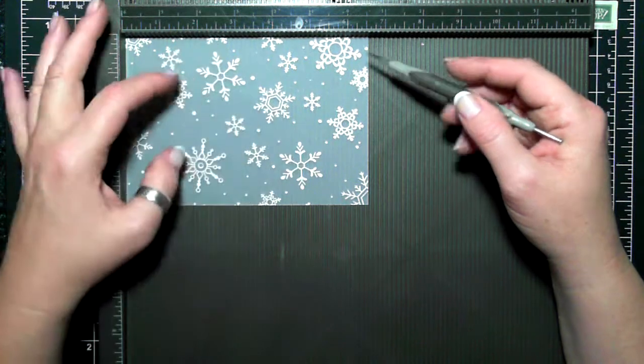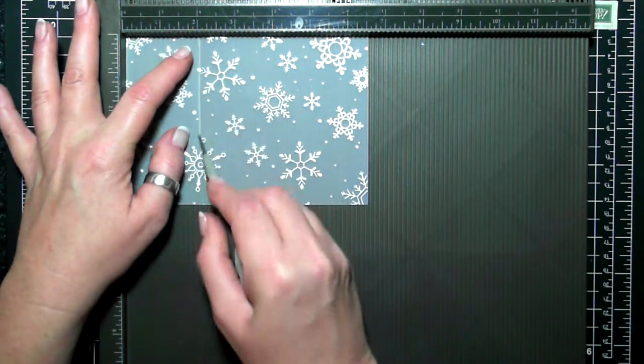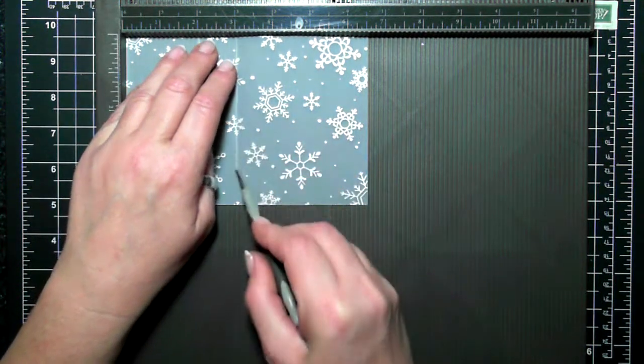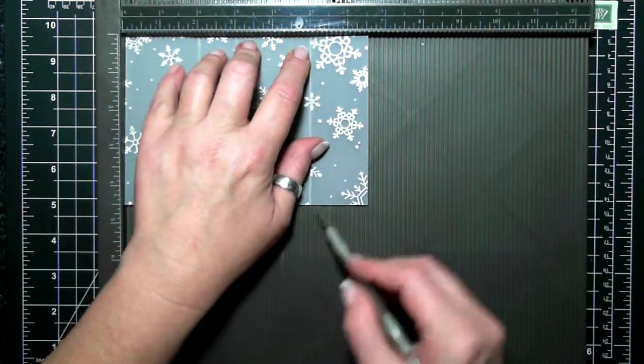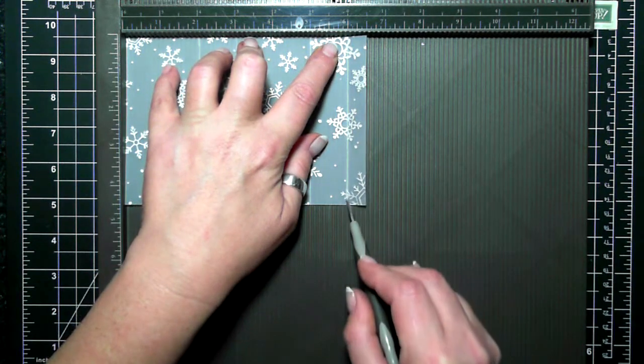I'm going to start scoring on the long side at 2 inches and 3 inches and 5 inches and 6 inches.